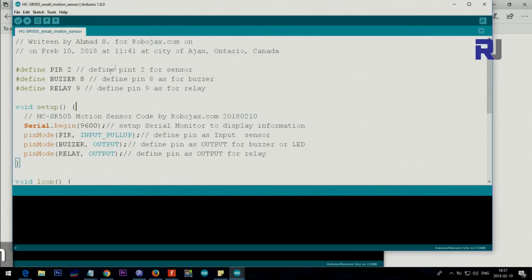Let me explain the code here from the top. We defined pin 2 for the PIR, that's a passive infrared. So the output from the module will be connected here, and then pin 8 for the buzzer to make a buzz for us, and also pin 9 for the relay. You can eliminate this if you don't need it. Setup starts from here to here, and then we have serial.begin 9600 for the serial monitor.